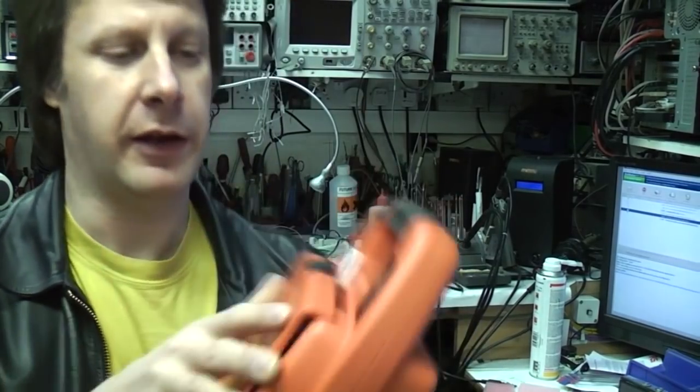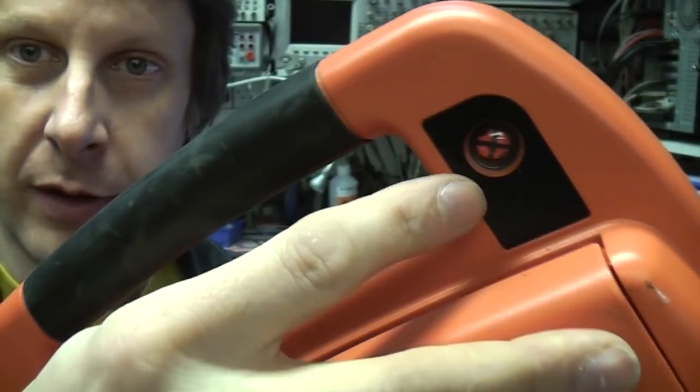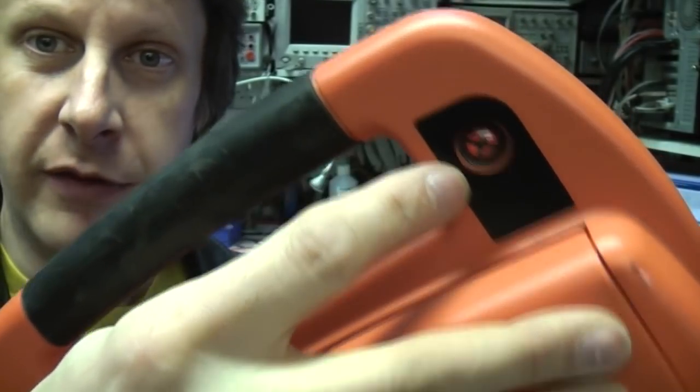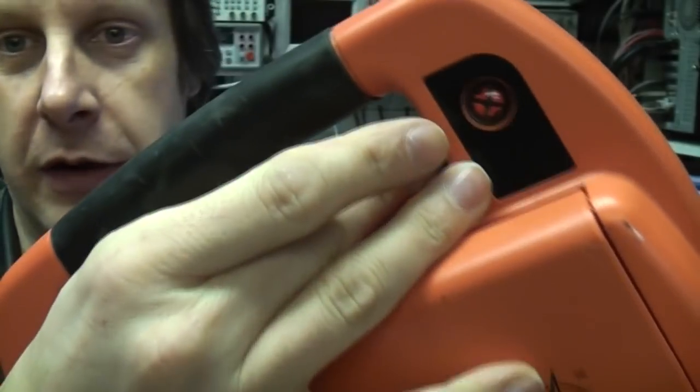One interesting thing is on the front, this indicator, this is like a flip-dot indicator. We'll pull that apart and operate it later but this gives an immediate indication that there's something wrong so it's red with a cross through it and this flips to green when it's okay.